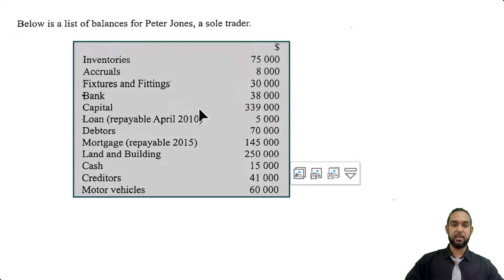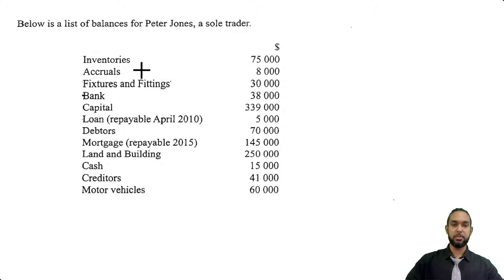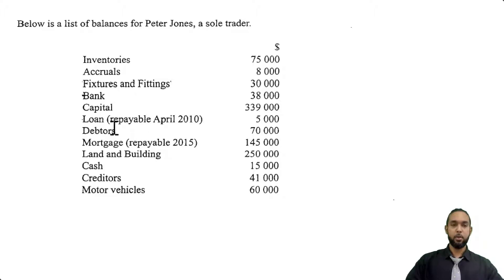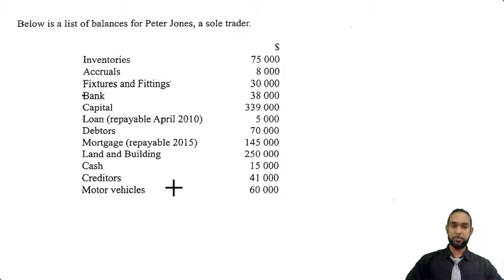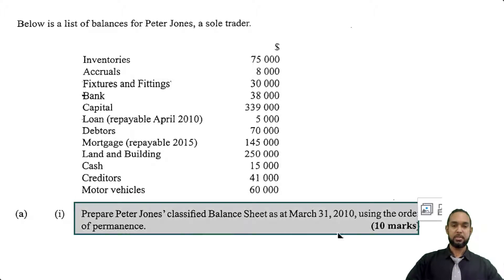They give us a list of balances with some familiar terms: inventories, accruals — which could mean accrued revenue or accrued expenses, but by default they mean accrued expenses — fixtures and fittings, bank, capital, loan repayable April 2010 (which may be current or non-current), debtors or accounts receivable, mortgage repayable 2015 (probably non-current), land and building, cash, creditors or accounts payable, and motor vehicles. We are to prepare Peter Jones' classified balance sheet as at March 31st 2010 using the order of permanence.